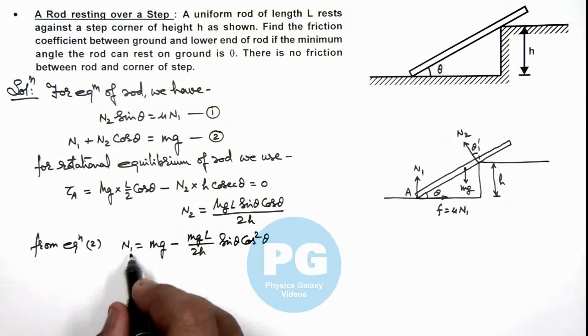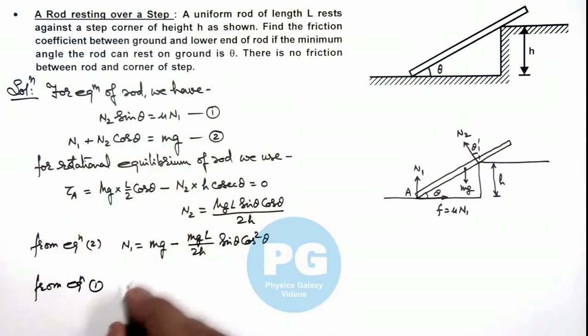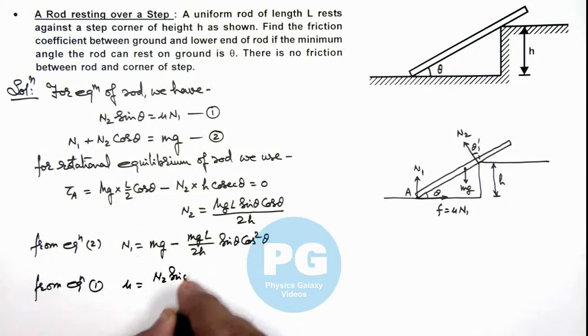Then we can write from equation 1, we directly get the value of mu which is N2 sine theta by N1.